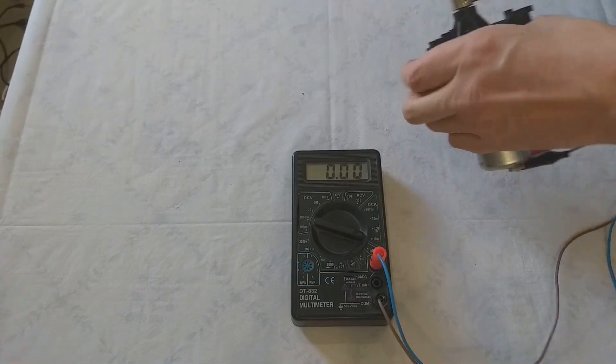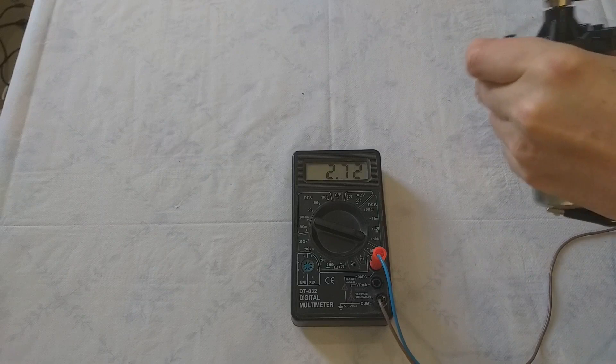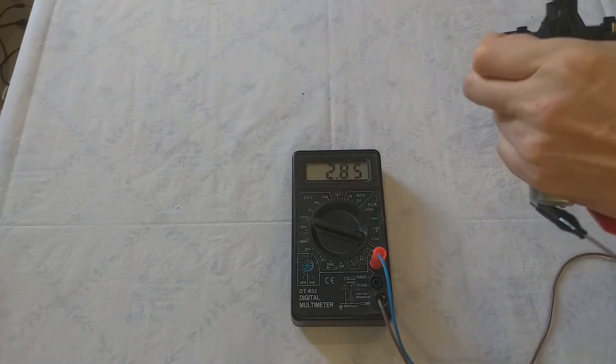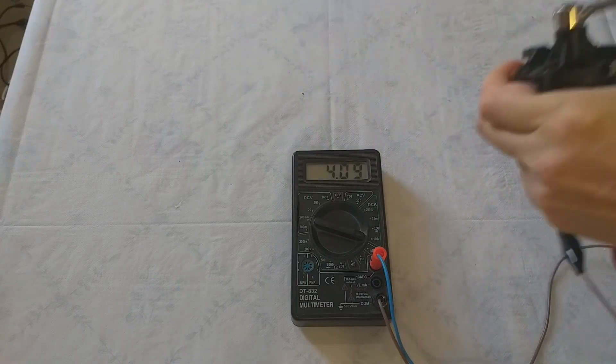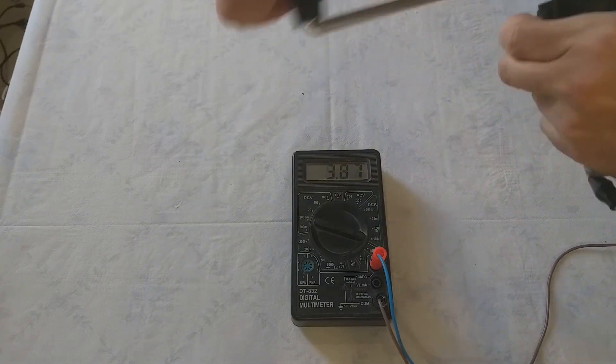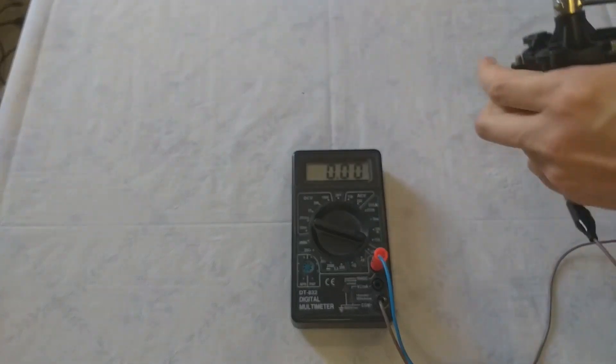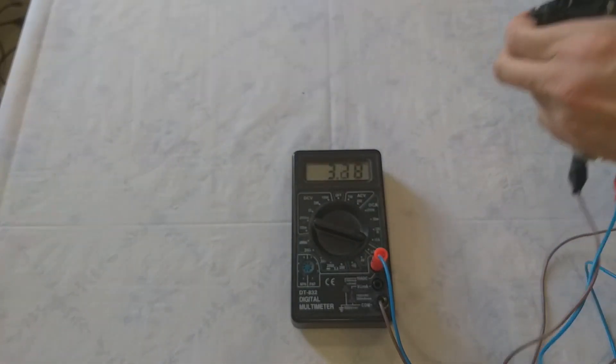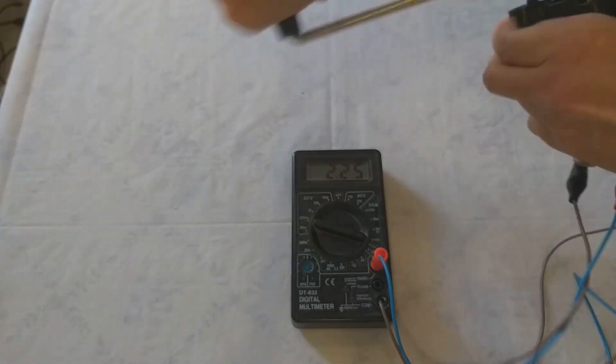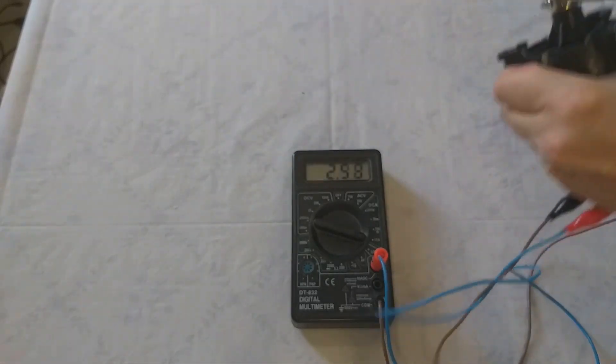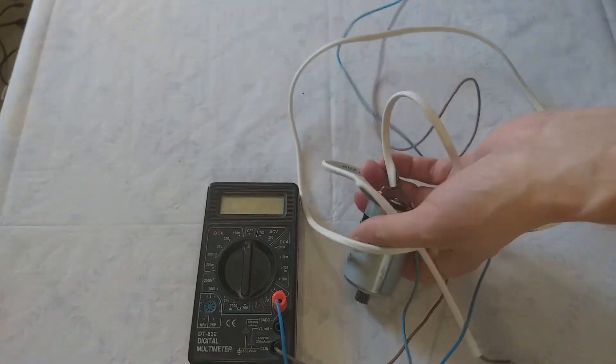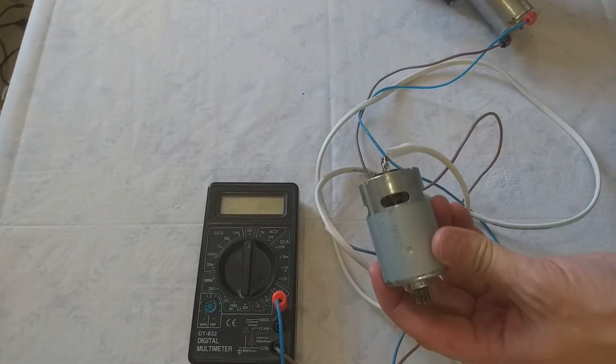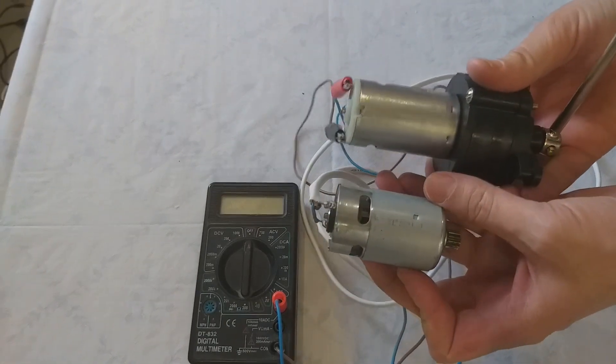Let us measure the current the generator generates. Connect the tester. The handle has become very difficult to turn. Current as you can see is 2-3 amps. Now we connect the generator to the engine.